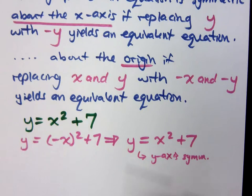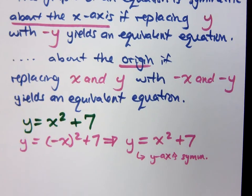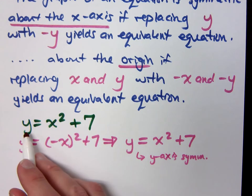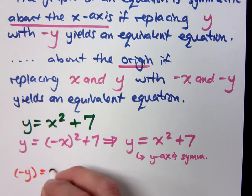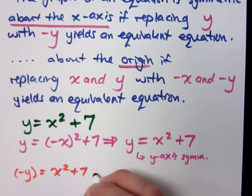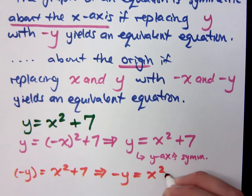Well, what if I try to check x-axis symmetry? X-axis symmetry says replace y with negative y. So if I do negative y instead, that means negative y equals x squared plus 7. Is that the same as my original?